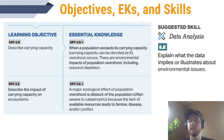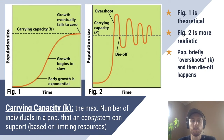Our suggested science practice for the day is data analysis — specifically explaining what the data illustrates about an environmental issue. Remember that every population has a carrying capacity, and it's based on the resource needs of that species and the availability of those resources in a given ecosystem. We call these resources limiting resources, and they're most often food, water, or space such as habitat or hunting areas.